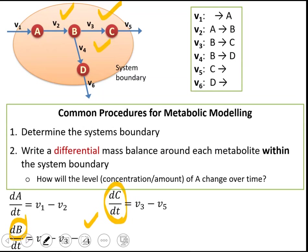This is the change in the concentration of C over time. C is produced by reaction V3 and consumed by reaction V5. Finally, for metabolite D: it is produced by reaction V4 and consumed by reaction V6. At the end, we had four intracellular metabolites — four metabolites within the system boundary — and we have written four differential mass balances.